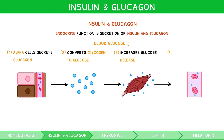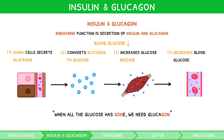A useful phrase you can use to remember this is: when all the glucose has gone, we need glucagon. The response of the pancreas in this way is an example of what is known as a negative feedback cycle. This describes the fact that whenever blood glucose concentration rises, a physiological response is created to lower it, but if low, a response is created to increase it. This phenomenon is evident in many homeostatic balances, as we will see in this video.